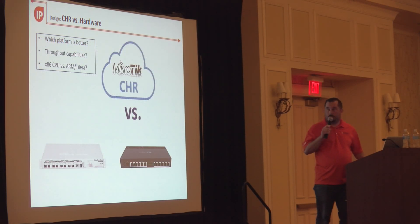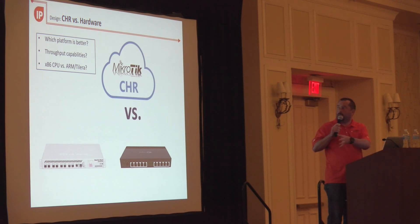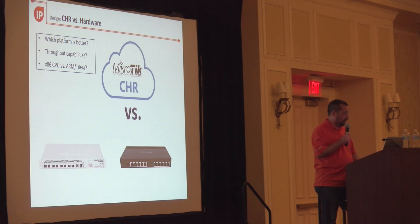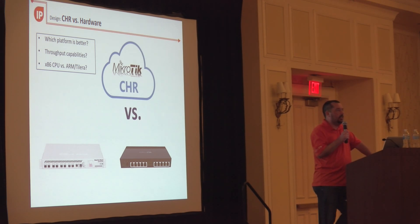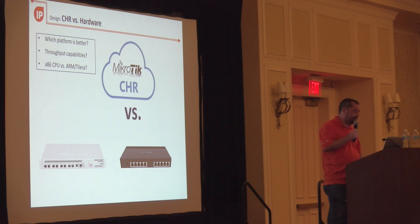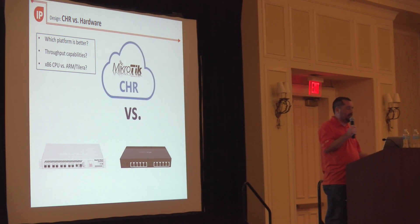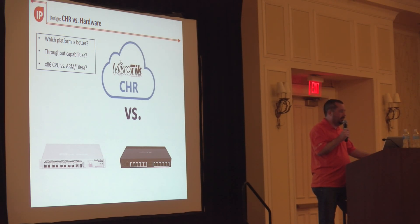The next couple of slides I borrowed from Kevin — they cover why you would go CHR versus physical. There are numerous benefits, but mainly the biggest one is that the CHR just seems to handle application forwarding better than the physical side. The Tilera processor is obviously brilliant at network processing, but as soon as you start adding services you'll tend to see the CPU spike and resources degrade.